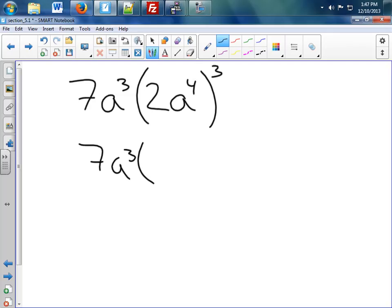Now, remember, the product of the power means I have to bring them to everything in here. So that becomes 2 cubed a to the 12th. Again, I'm going to simplify inside the parentheses first. 2 to the 3rd power is 8.